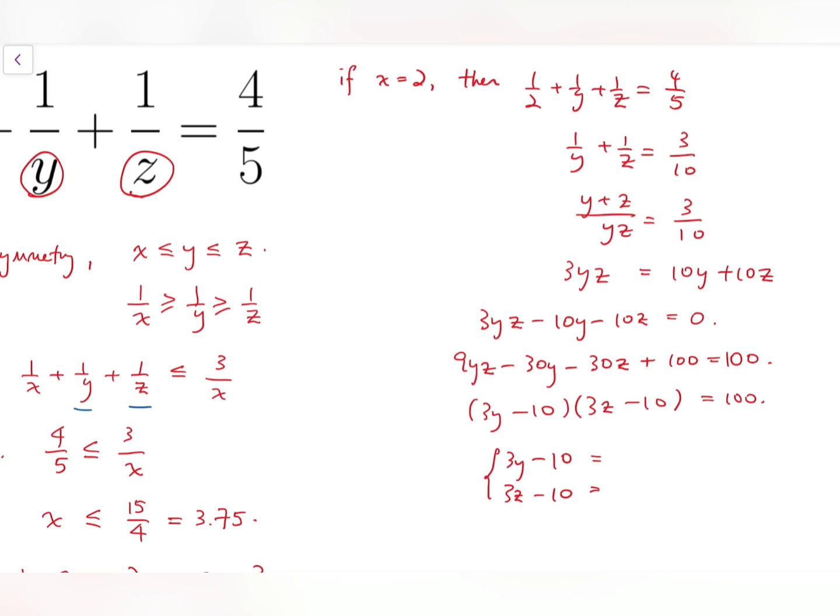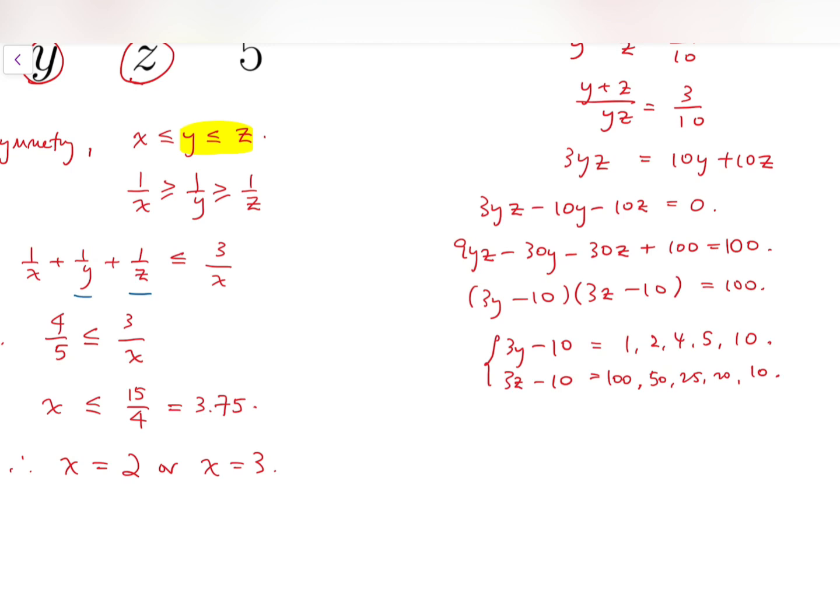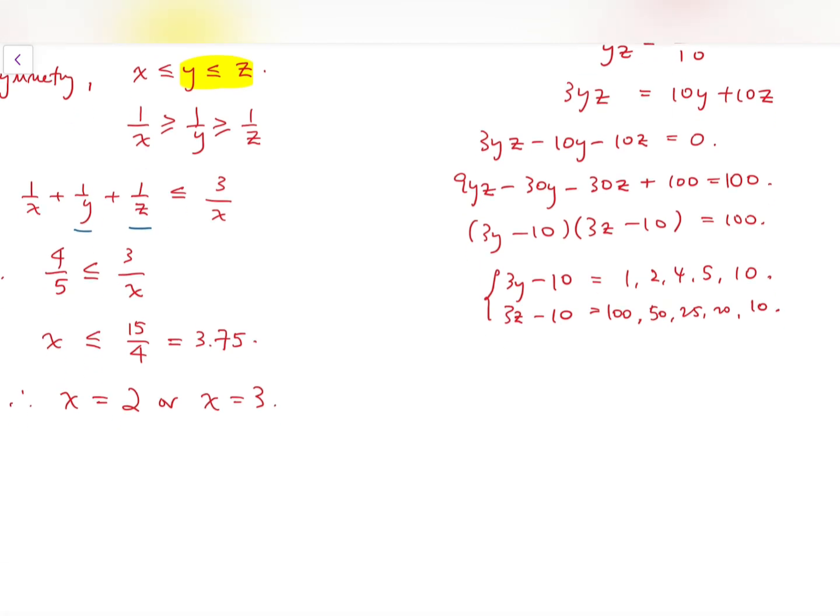Now, I'll focus on the positive factors of 100, and because I've assumed that y is a smaller number when comparing with z, so I'm just going to put 3y-10 to be equal to some smaller factors of 100, which are 1, 2, 4, 5, and 10. We stop at the square root of 100. While for the solutions for z, 3z-10 can be 100, 50, 25, 20, and 10, corresponding to the factors above. So that their product will be 100.